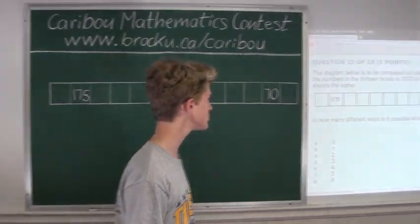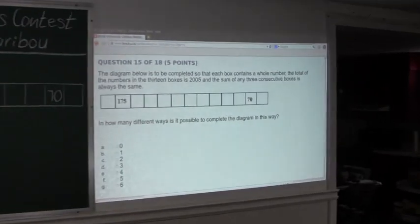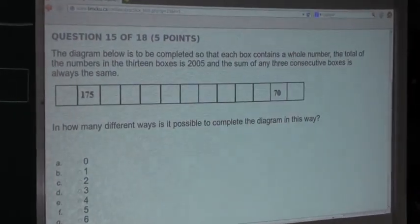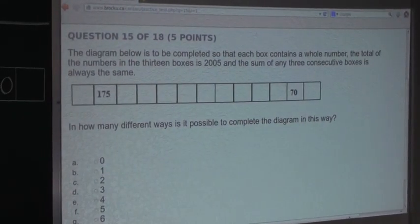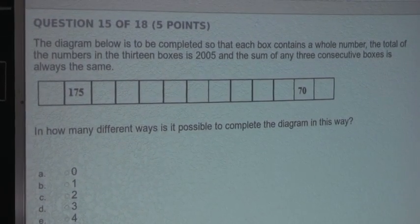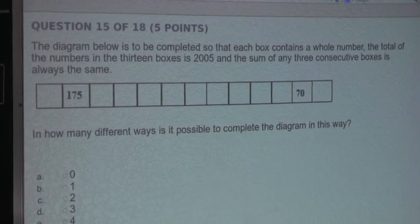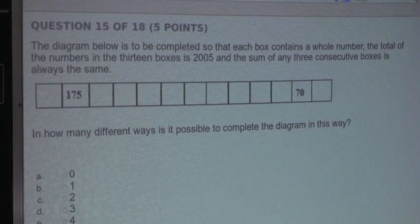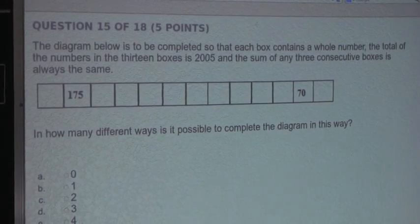So the question is: the diagram below is to be completed so that each box contains a whole number. The total of the numbers in the 13 boxes is 2005 and the sum of any 3 consecutive boxes is always the same. In how many different ways is it possible to complete the diagram in this way?